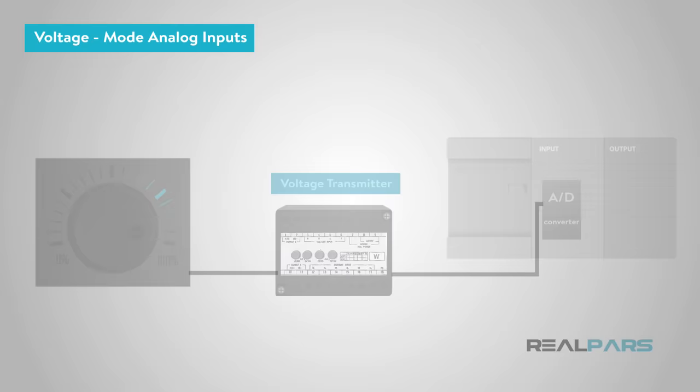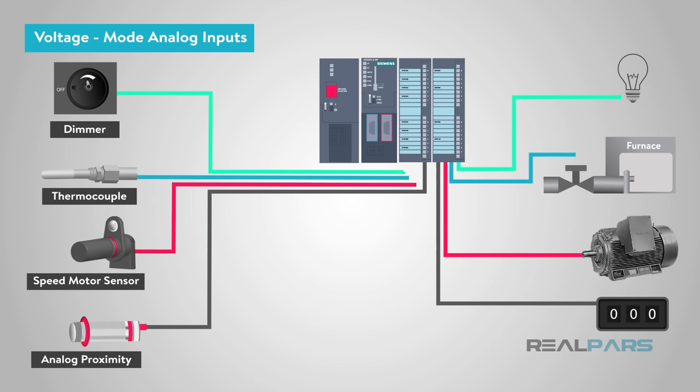The PLC program can use this input to control, for example, the brightness of a light bulb, the output of a heat source, the speed of a motor, or how fast a counter counts.